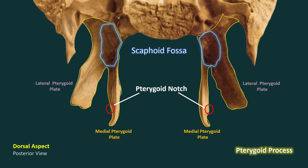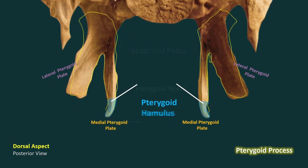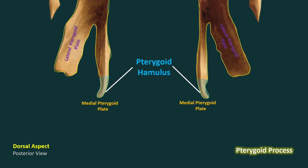On its medial side it has a scaphoid fossa, which is a deep depression present on the pterygoid process. Next we have the pterygoid hamulus, which is a hook-like process at the lower extremity of the medial pterygoid plate. The pterygoid hamulus has a sharp bend which we call the groove of the pterygoid hamulus.